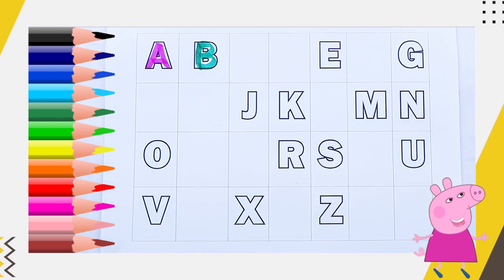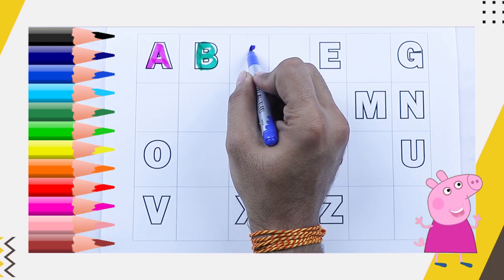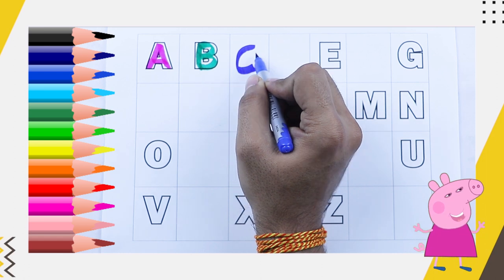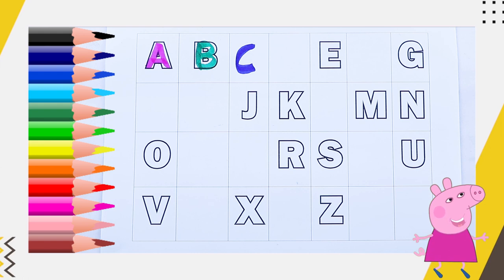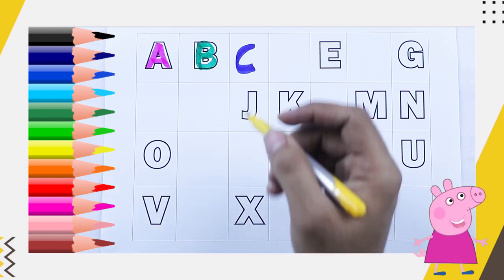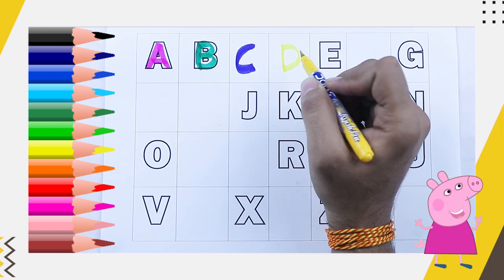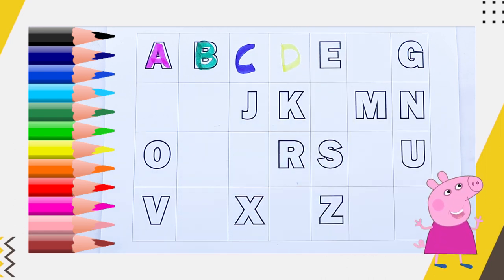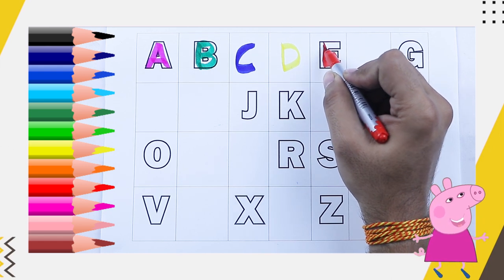Blue color, C. What next? C, C for cat. Tell me what next? What is the next letter? Next letter is D, D for dog. Red color, E, D for elephant.